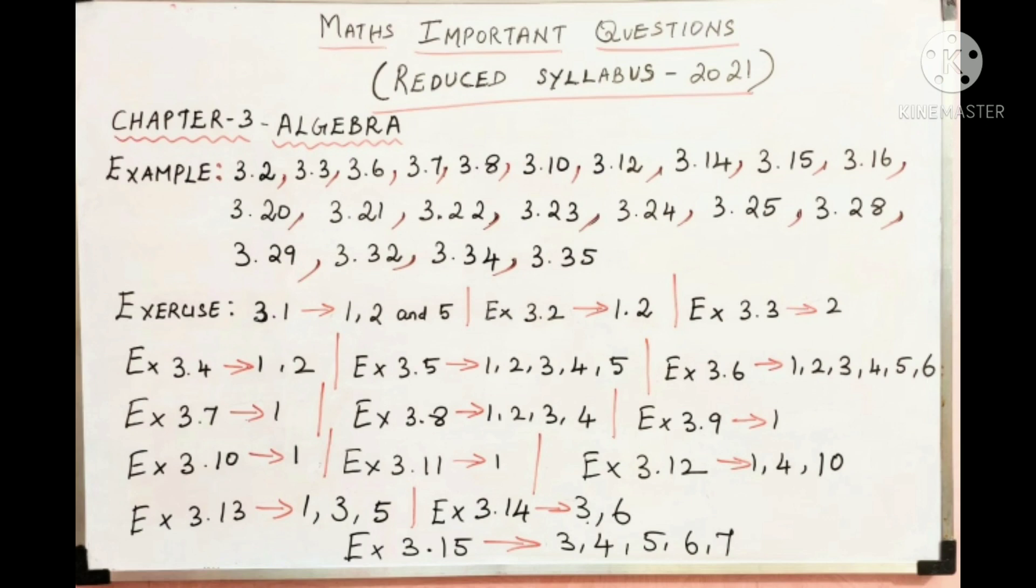Exercise 3.1: 1, 2 and 5. Exercise 3.2: 1 and 2. 3.3: 2 sum. Exercise 3.4: 1, 2. 3.5: 1, 2, 3, 4, 5. 3.6: 1, 2, 3, 4, 5, 6. 3.7: 1 sum. 3.8: 1, 2, 3, 4. 3.9: 1, 3. 3.10: 1st sum. 3.11: 1st. 3.12: 1, 4 and 10. 3.13: 1, 3, 5. 3.14: 3, 6. 3.15 and 3.16: 3, 4, 5, 6 and 7. This is very important.